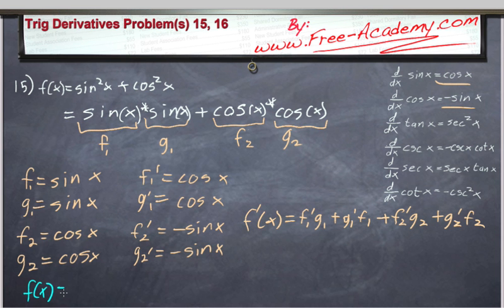So now that we have that, it's just a matter of plugging and chugging everything in. F1 prime is cosine of x times g1 which is sine of x, plus g1 prime which is sine of x times f1 which is sine of x. So that's another cosine x sine x.